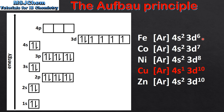Next we have iron which is 4s2, 3d6. Moving on to cobalt which is 4s2, 3d7. And then nickel which is 4s2, 3d8. When we get to copper we have another exception to the Aufbau principle. The electron configuration of copper is 4s1, 3d10. And finally we have zinc which is 4s2, 3d10, which completes the 3d sublevel.